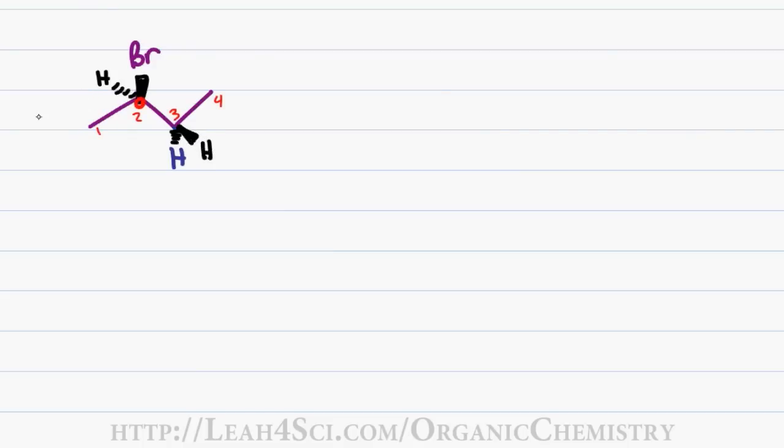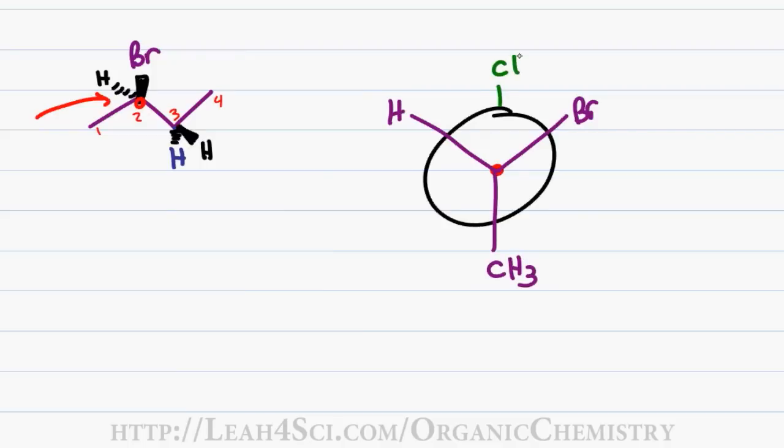We'll draw the Newman projection looking down carbon 2 to carbon 3 so that carbon 2 is the forward atom. On the forward atom we have a bromine up to the right, hydrogen up to the left, and a methyl group going down. On the rear atom we have a CH3 going up and a hydrogen going down both to the right and the left. Notice that we have both hydrogen and bromine lined up anti in a straight line, and this allows us to do that domino effect as follows.